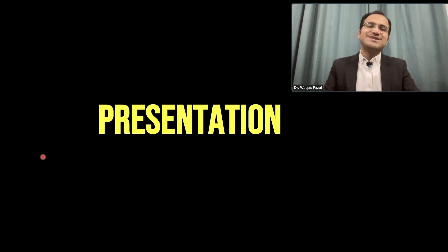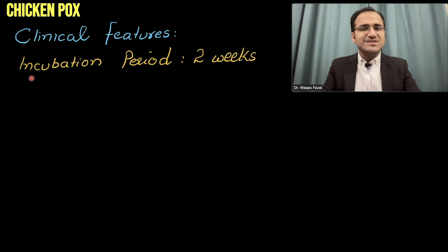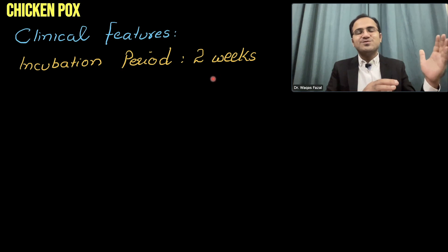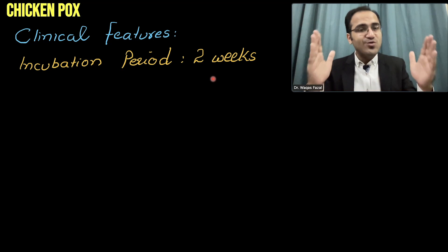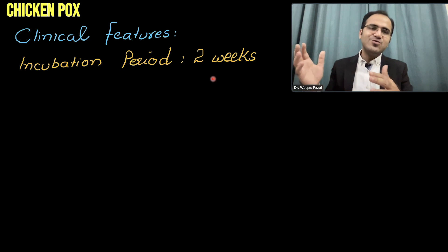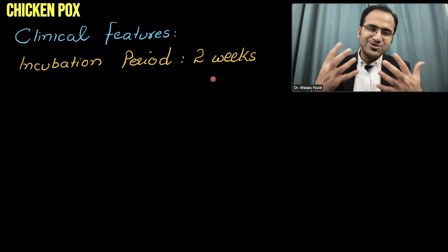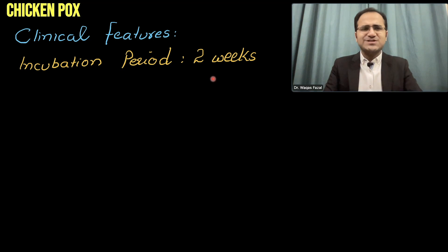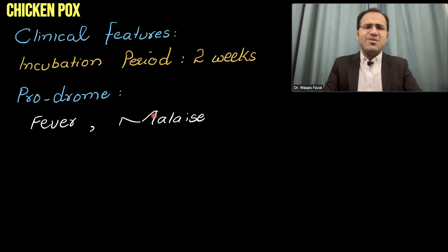Coming to the presentation of chickenpox. The presentation occurs after an incubation period of two weeks. The patient got exposed to varicella zoster virus and there is a period of two weeks in which the patient has no symptoms. After two weeks, the patient starts to develop the prodromal phase. In the prodromal phase, the patient has fever, malaise, and severe body aches.